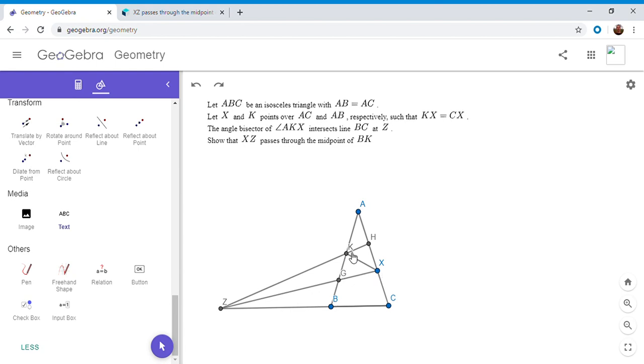For this problem, I'm assuming that XZ intersects BK at G. If you haven't seen this problem and you want to try it, feel free to pause the video.